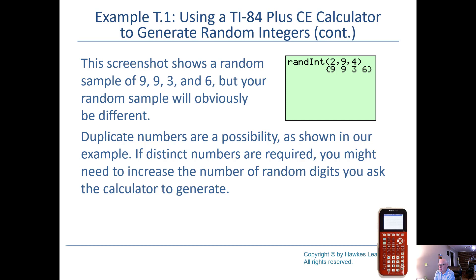If you really wanted four integers that were different, what you might want to do is put two, comma, nine, comma, and then maybe put a five or a six there. And then just take the first four different integers that you see in your results. And then you'd be set. So if you've got a TI-83 or four, this is how you do it.